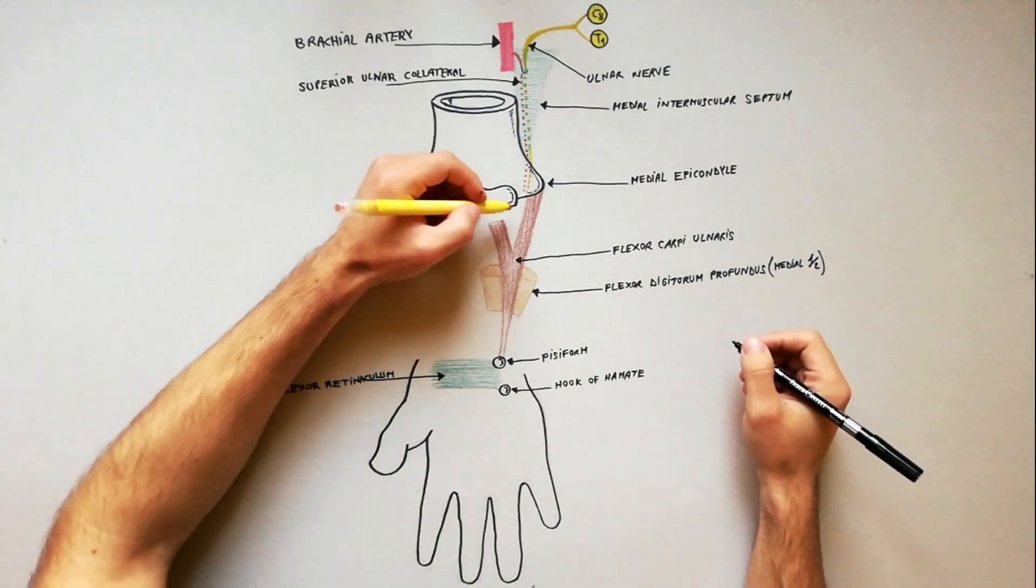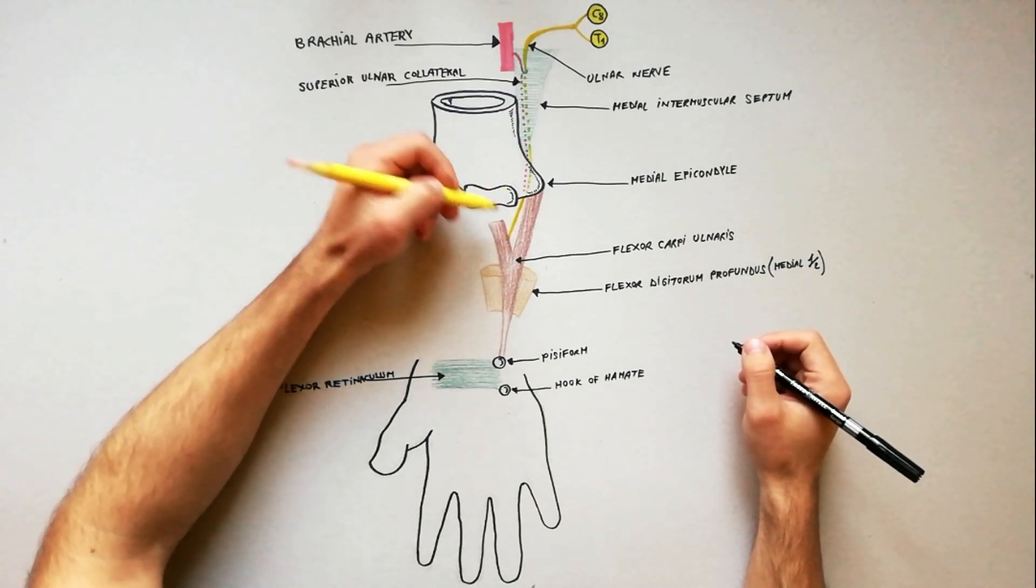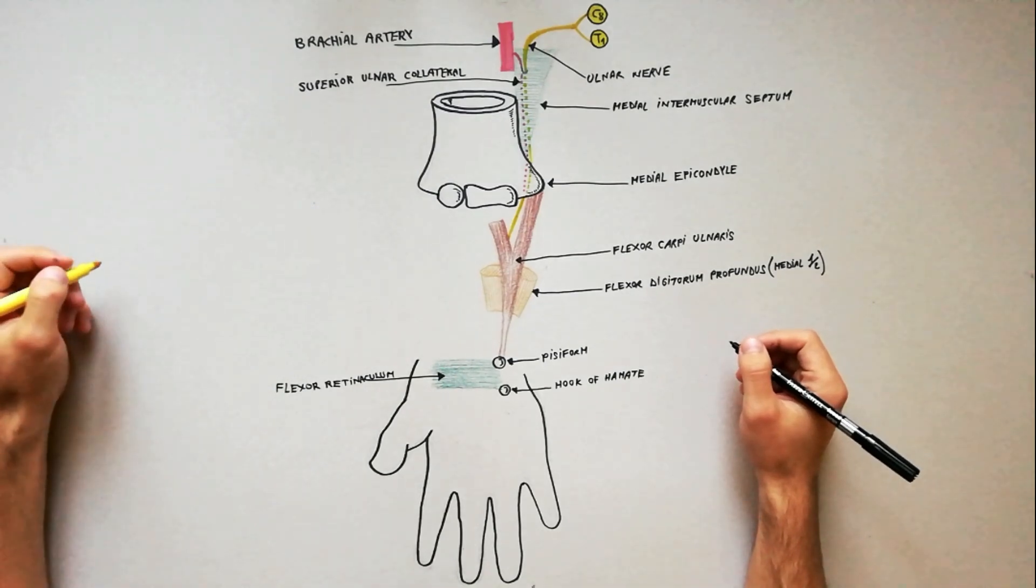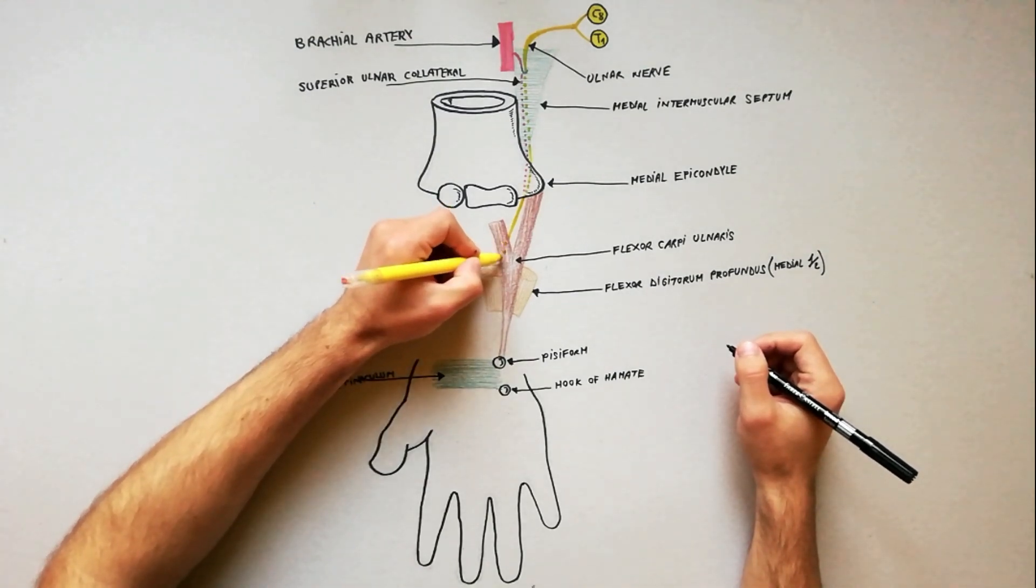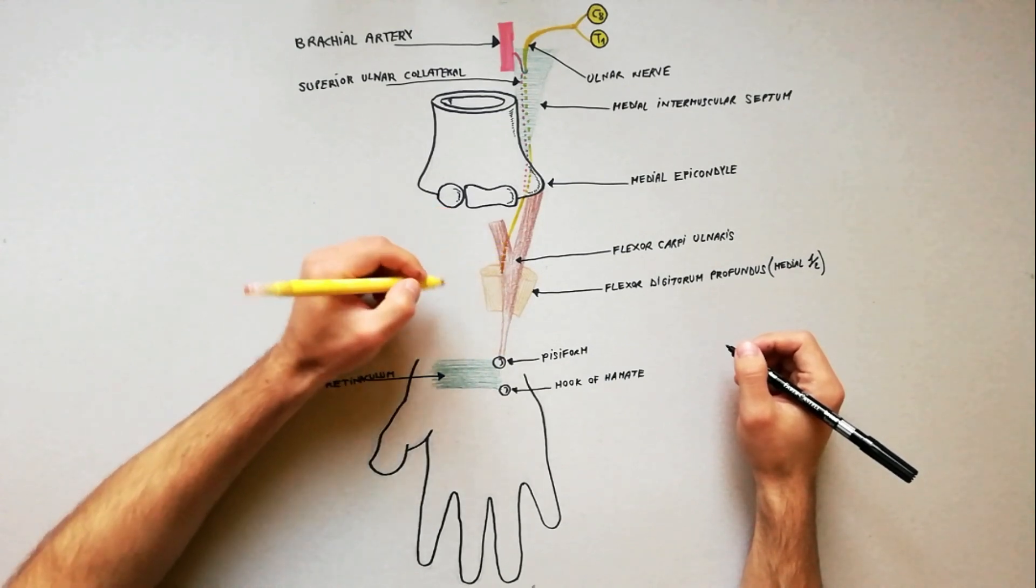The nerve enters the forearm by passing between two heads of flexor carpi ulnaris. In the upper third of the forearm, it runs almost vertically downwards under flexor carpi ulnaris.